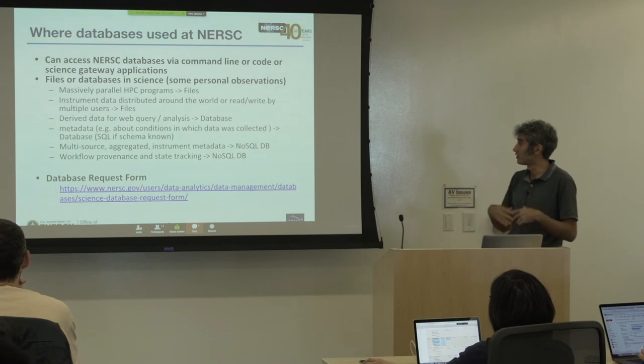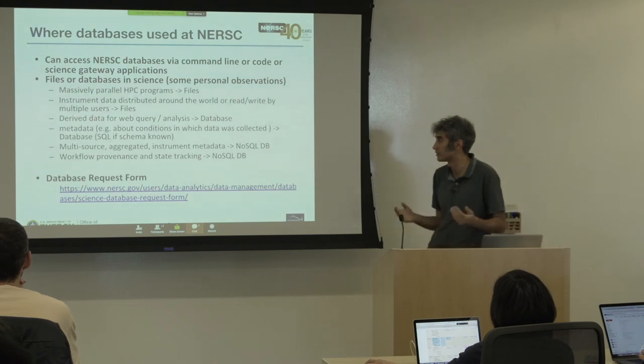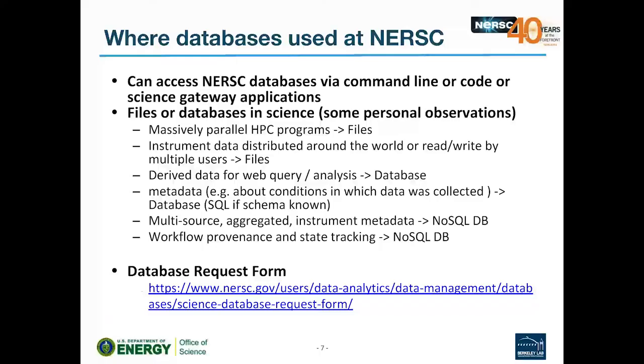However, when you have derived data and want a web application to query it very fast, databases are a good model. Similarly, for metadata about experimental conditions, you might want an SQL database if you know the schema well and want it to be stable.